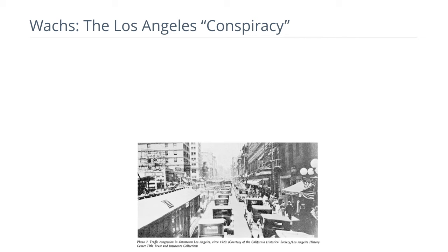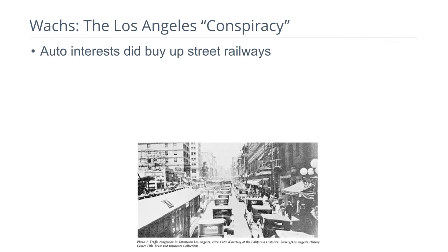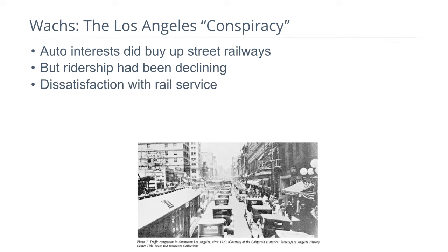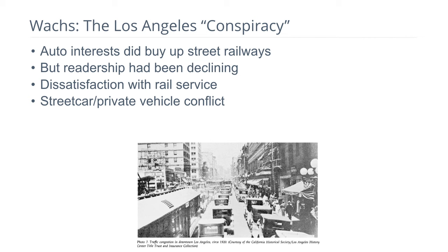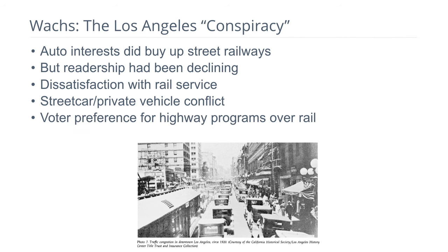I'll mention the idea that there was a conspiracy in the 1950s and 60s to remove street railways and replace transit with rubber-tired buses — auto interests did buy up electric streetcar companies, and that's often said to be the cause of streetcar decline. But in fact, ridership had been declining since 1920 with a blip during World War II gas rationing. People were dissatisfied with rail service, and voters chose highway programs over investing in rail. The idea that we could have a wonderful rail transit system if only the streetcars hadn't been removed isn't quite right — voters chose cars thinking it would liberate them, not knowing the environmental and social equity consequences.